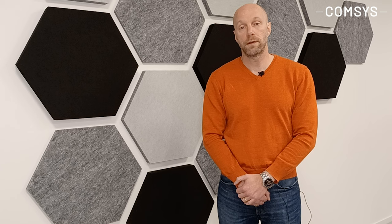The harmonic orders, if we have a three-phase load, will be the 5th, 7th, 11th, 13th, and so forth — the six-pulse harmonics, which are equivalent to 6n ± 1. So for 6×1 ± 1 we get five and seven, and for 6×2 ± 1 we get eleven and thirteen, and so forth.